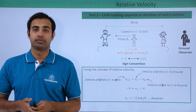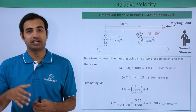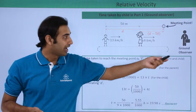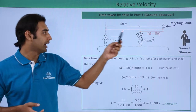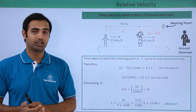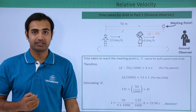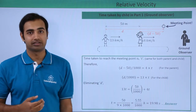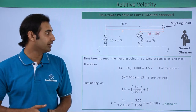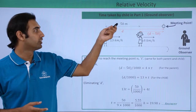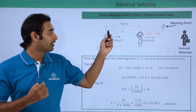Now for the third part, we calculate the time taken in both cases. In the first case, the child runs in the direction of the belt. As the ground observer sees it, the mother moves rightward at 4 km per hour and the child moves rightward at 13 km per hour. The meeting point between mother and child will be somewhere to the right. The initial separation between child and mother is 50 meters, since the child starts from his father and runs toward his mother.